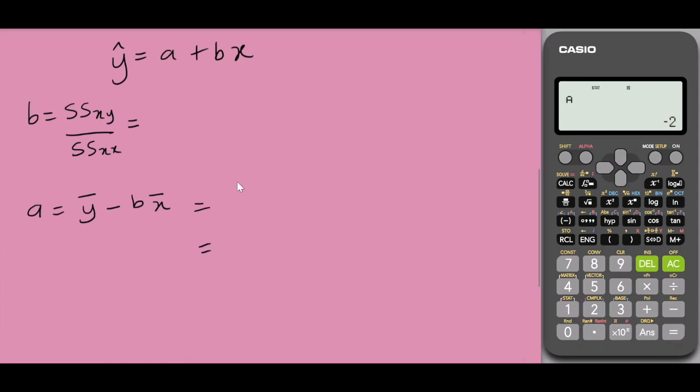A is minus 2. Shift 1 again, 5, select 2 for b equals to. So b is 0.7. My simple linear regression model would be minus 2 plus 0.7x.